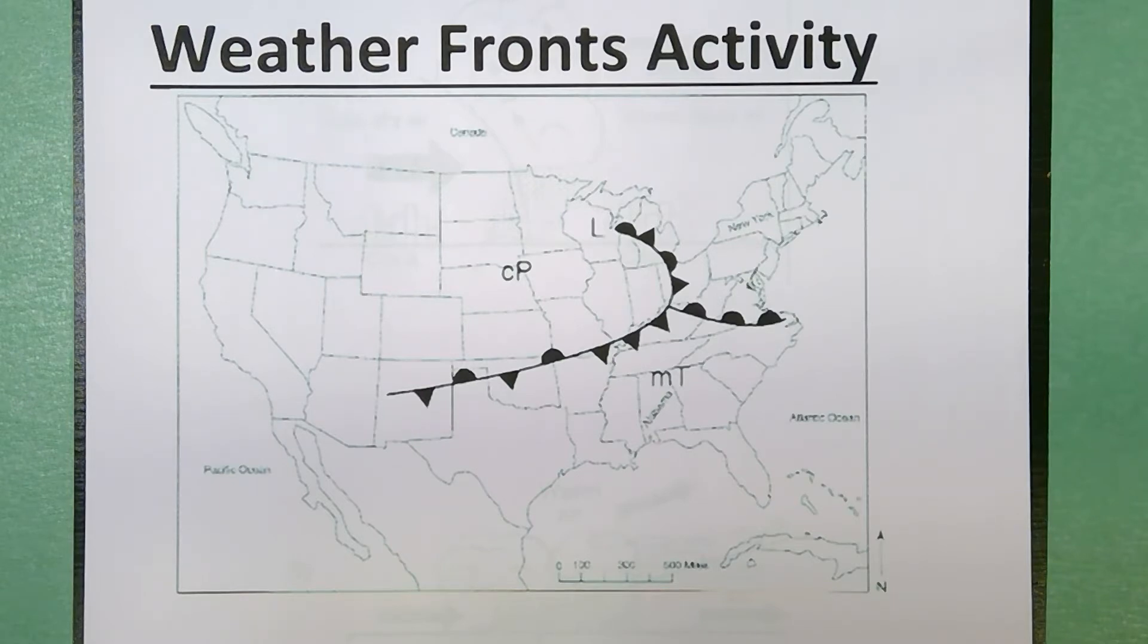I've selected this map from an old Regents. It shows you a low pressure storm system and actually it's got all four fronts that are shown on the reference table on them.